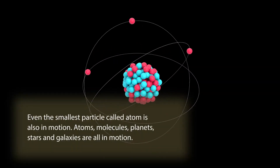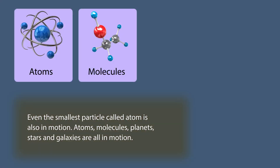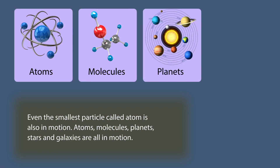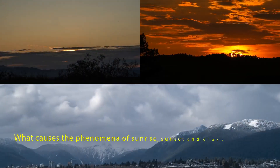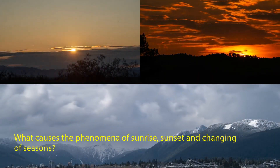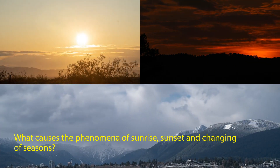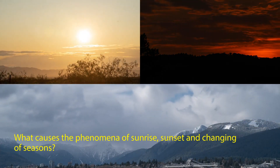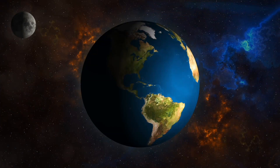Even the smallest particle called the atom is also in motion. Atoms, molecules, planets, stars and galaxies are all in motion. Children, have you ever thought what causes the phenomena of sunrise, sunset and changing of seasons? It is due to the movement of the Earth.